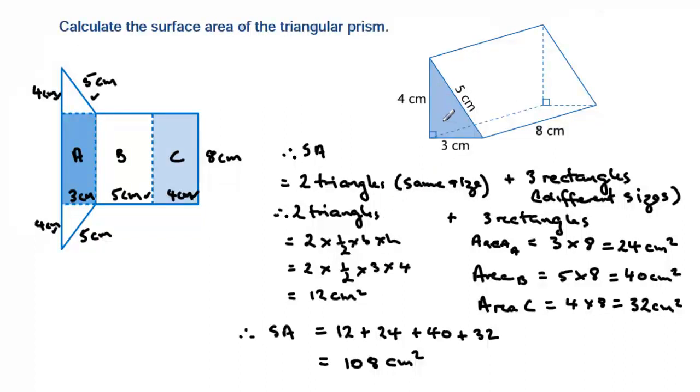So the important thing is to make sure that you usually draw a net, or if you're very good at it, you can see it straight away, but you've got to make sure that you look at every single side, work it out systematically, and then add them up. And in that way, you should be very accurate in your results.